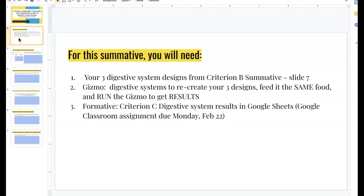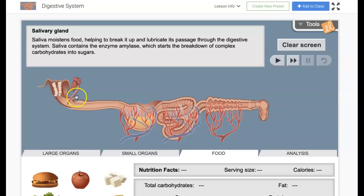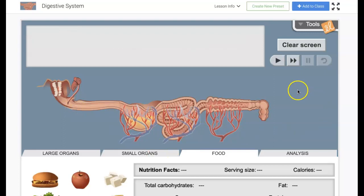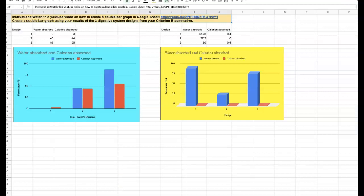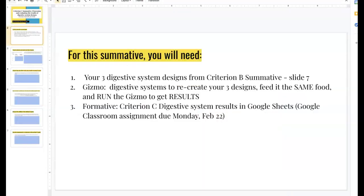You will need your Criterion B Summative, your slide 7 so you can see your three designs, the Digestive System Gizmo so you can recreate the design and run it, and your formative. If you haven't done your double bar graph yet, then you will need to start with your Criterion B, slide 7, so you can see your three designs. Let's go to Criterion C.